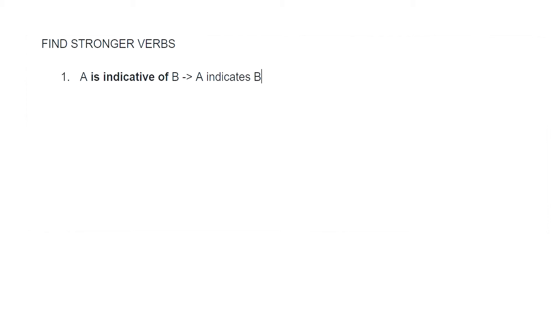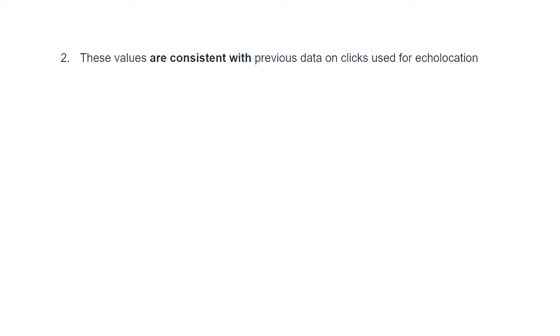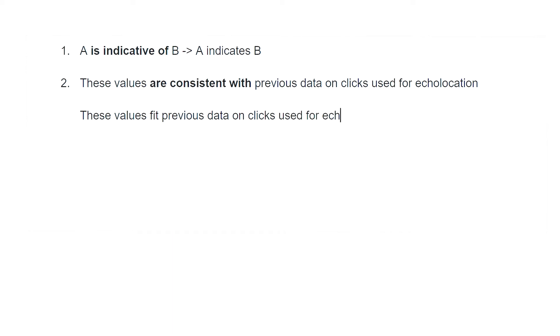Another example: 'These values are consistent with previous data on clicks used for echolocation.' The problem is 'are consistent with' — a better word would be 'fit': 'These values fit previous data on clicks used for echolocation.' Another possibility would be 'agree with,' etc. Looking out for 'is' or 'is being' will also help you find instances of passive voice that you want to change into active voice.